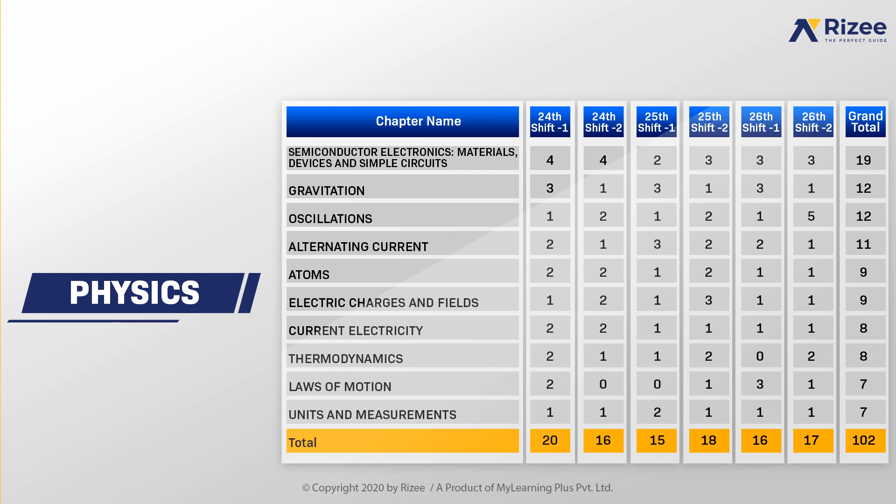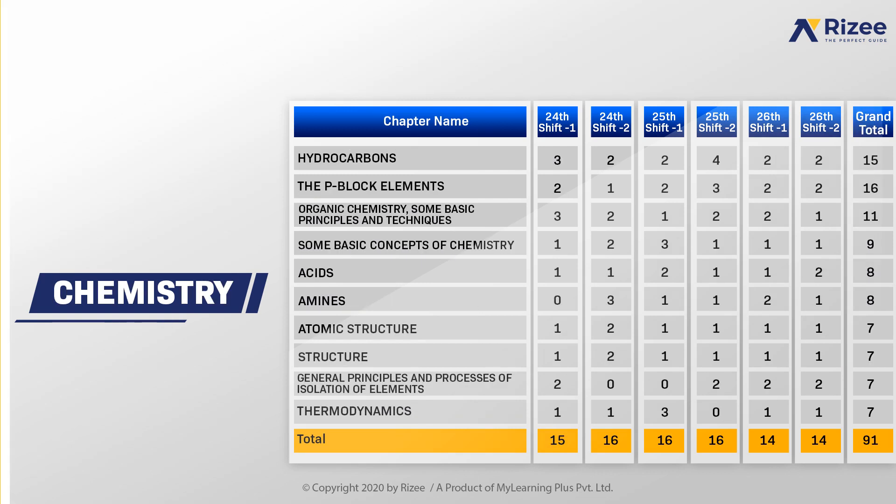In chemistry, out of 180 questions, 91 questions came from the top 10 chapters. Hydrocarbons is a key chapter where 2 to 4 questions appeared in each shift. These are the important chapters you need to focus on for the upcoming JEE Mains March exam.